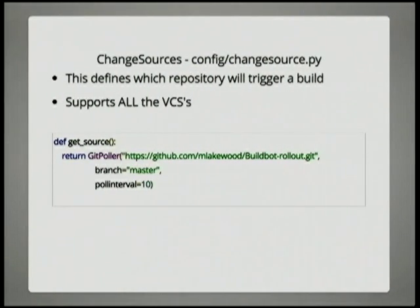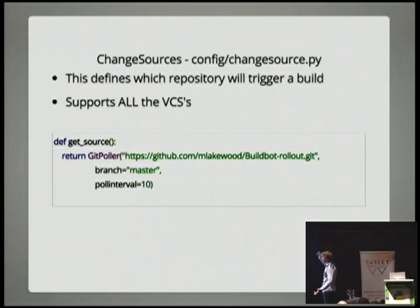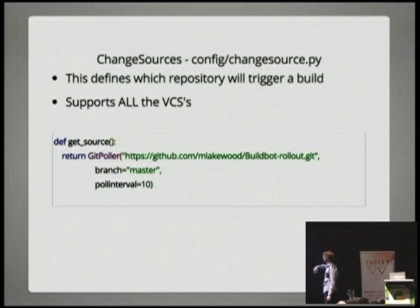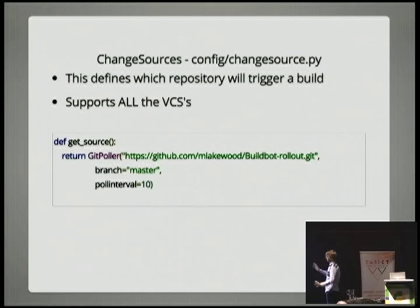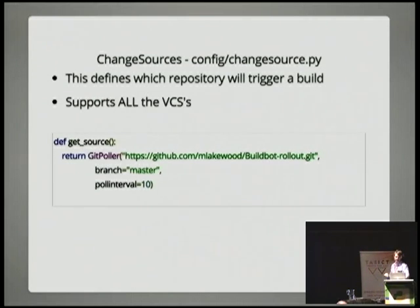Change sources — it's kind of self-explanatory, but it defines which repository will trigger the build. In this case, any change that happens to the buildbot-rollout GitHub repo will cause a change event, which then filters through to the builders and all the way through. It supports all VCSs — all of them. This is Git, but it does SVN and everything else.